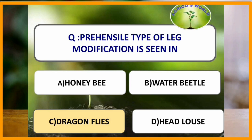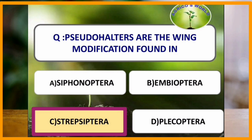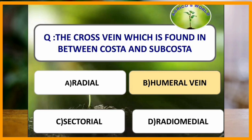Prehensile type of leg modification is seen in which of the following insect? Prehensile type of leg modification is seen in dragonflies. Pseudohalteres are the wing modification found in which of the following order? Pseudohalteres are found in the order Strepsiptera. In males of Strepsiptera, the forewings are reduced to pseudohalteres and the hind wings are fan-shaped. They are also called twisted wing parasites. The cross-vein found between costa and sub-costa is the humeral cross-vein.